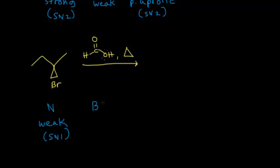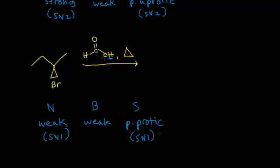When I think about formic acid as a base, it's an acid, so it cannot be a very strong base — weak base. The solvent is also formic acid, the nucleophile is the solvent. We classify all carboxylic acids as polar protic solvents. A polar protic solvent favors SN1 because it will stabilize the carbocation that results.